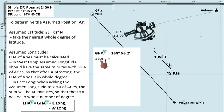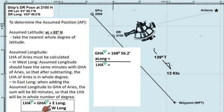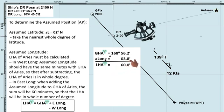Next, we will apply the assumed longitude to determine the LHA of Aries. Since our DR longitude is east, and to find LHA we add easterly longitude, so assumed longitude will be added. It is stated in the procedure that when adding the assumed longitude to the GHA of Aries, the sum should be in 60 minutes, so that the LHA is in a whole number of degrees. To achieve this, the minutes of the assumed longitude will be 3.8 minutes.